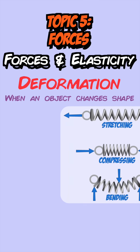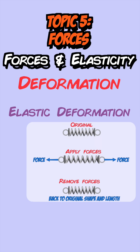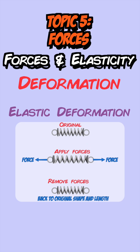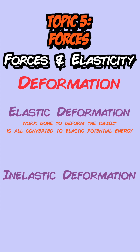Objects can be stretched, compressed and bent. Deformation can be elastic, where it returns to its original shape after the forces are removed, or inelastic, where it doesn't. In elastic deformation the work done is all converted into elastic potential energy stored in the object, whereas in inelastic deformation the work done is wasted as heat to the surroundings. You can work out the elastic potential energy stored using its equation.